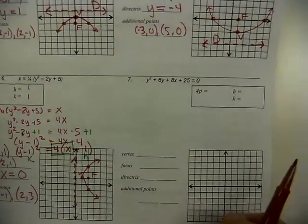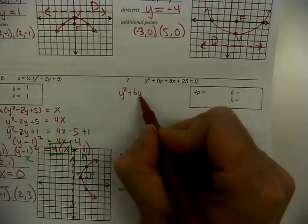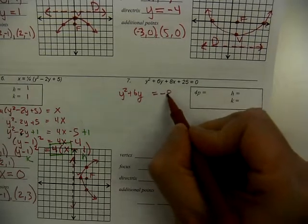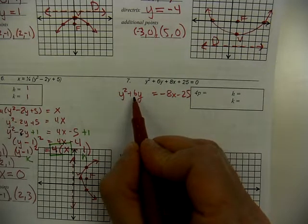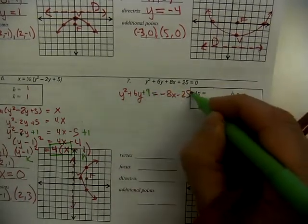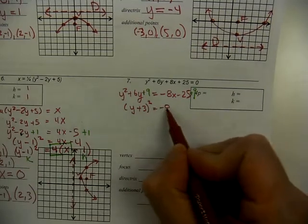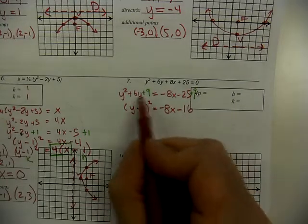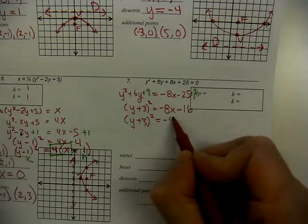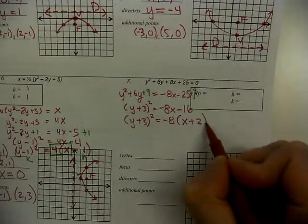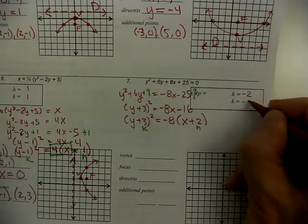Here's the last in this series. Find the term with power of two and put it on the left — all the y's on the left, so y² + 6y. Move everything else to the right: −8x − 25. The value of b is 6; divide by 2 to get 3, square to get 9. Add 9 to both sides to complete the square. Factor the left side: (y + 3)². Combine constants on the right: −16. We now need to factor out −8, giving (y + 3)² = −8(x + 2). So h = −2, k = −3, vertex is at (−2, −3).